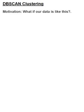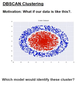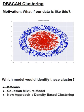But what if your data is neither Gaussian mixture of spherical or elliptical in nature? How do we proceed to identify red versus blue clusters as shown in this picture? Which model would identify these clusters? K-means will not help. Gaussian mixture models also will not help. So we need a newer approach, which is based on the density of the data. DBSCAN is one of the popular density-based algorithms that we're going to cover in detail in this video.